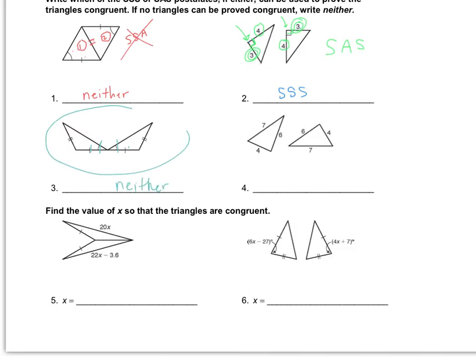Over here, there's a 6 and a 6, a 7 matching with a 7, and 4 and 4. So this is by side side side — the two triangles are congruent there.